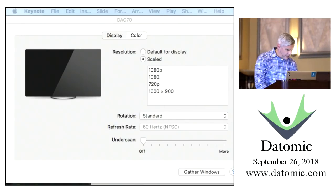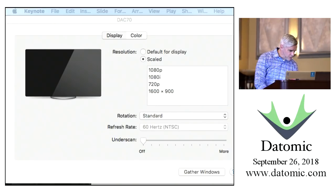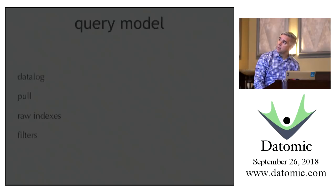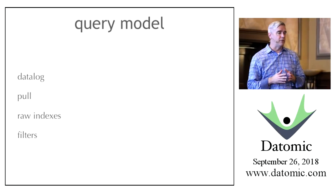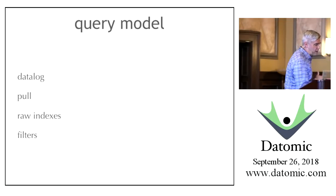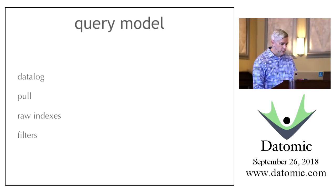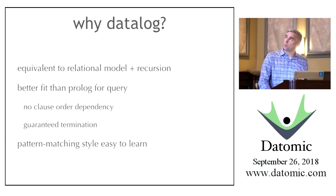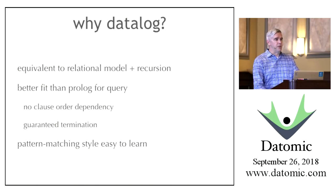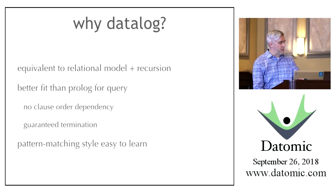Let's talk about query. There are four things to talk about: two that are basic and two that are advanced. I'm going to talk about the two basic ones today—Datalog and pull. Datalog is a logic language for databases developed at around the same time as the relational algebra that became SQL. They don't differ in effectiveness; they're built on the same mathematical foundations, and Datalog is similar to the relational model once you add recursion.